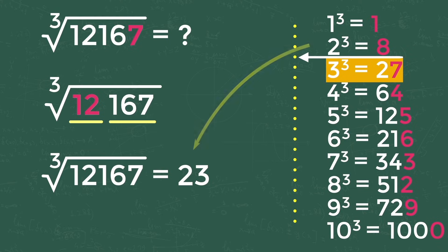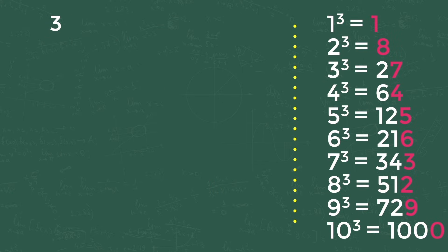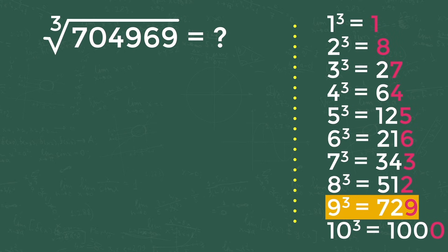Let's try another example. Cube root of 704969 is how much? Here the last digit is 9. By matching it with 1 to 10 cube digits, we got 9 as the matching number, as last digit of 9 cube is 9. So the last digit of the answer is 9.